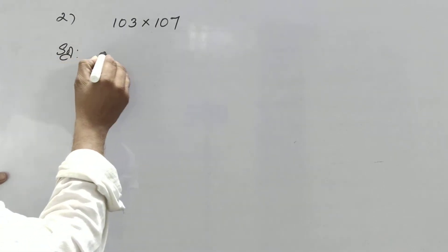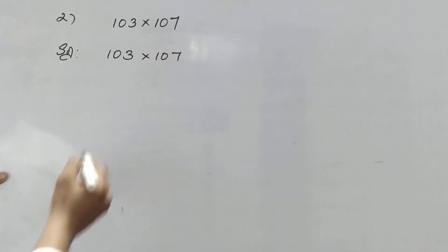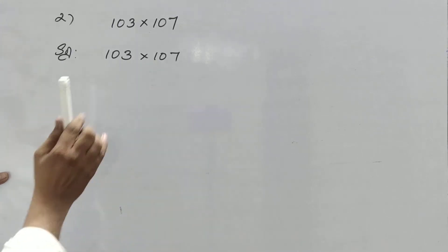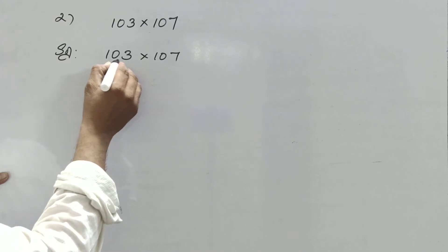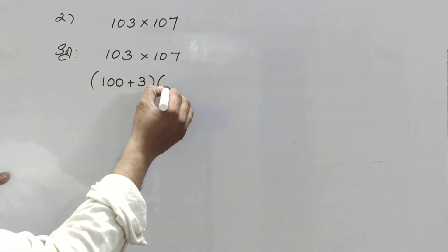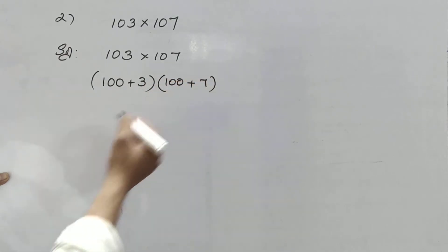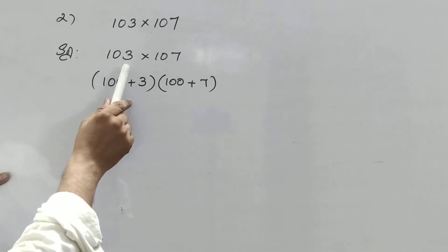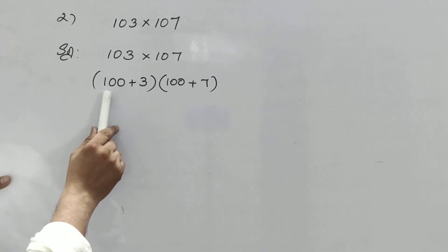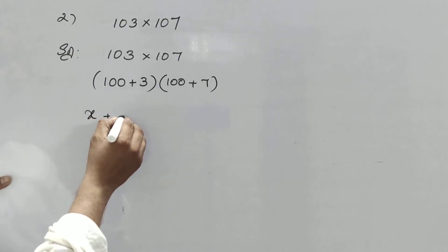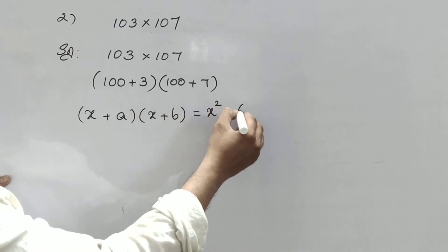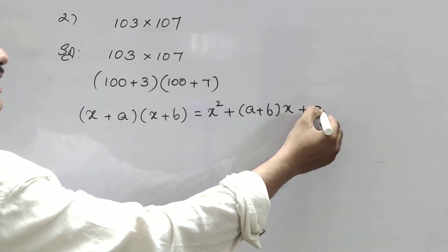Be very careful, children. 103 into 107 — if you clearly observe, both are greater than 100. So when both are greater than 100, you can write 103 as 100 plus 3, and 107 as 100 plus 7. Now if you clearly observe, the first terms are equal. That means you have to know the formula: (x + a)(x + b) = x² + (a + b)x + ab.